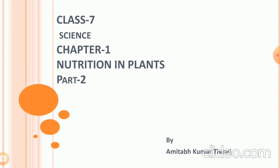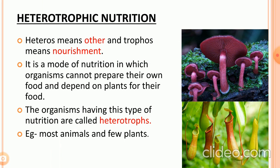Some plants depend on the food produced by other plants. This mode of nutrition is called heterotrophic mode of nutrition. The word 'heteros' means 'other' and 'anthropos' means 'nourishment.' It is a mode of nutrition in which organisms cannot prepare their own food and depend on other plants for their food. The organisms having this type of nutrition are called heterotrophs.